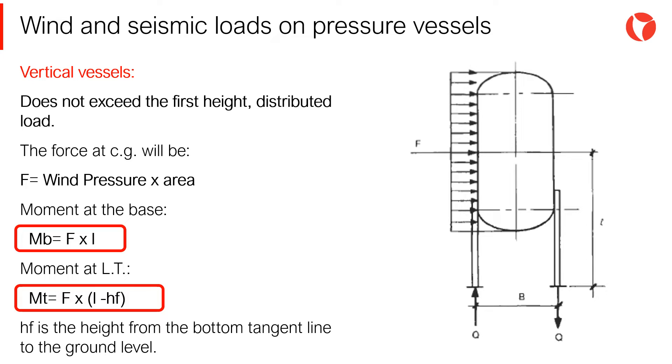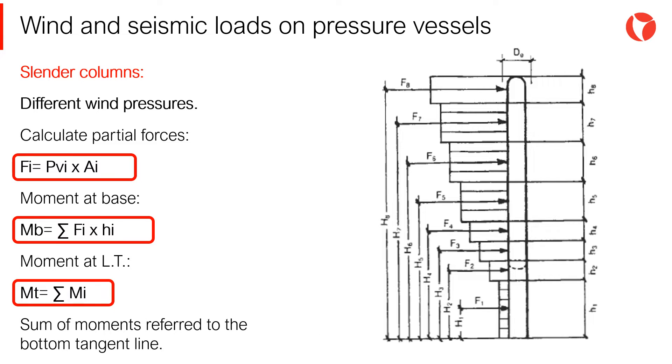The wind load F applied at the center of the cross section area of the equipment will be the wind pressure times the cross section of the vessel. For slender columns subjected to different values of wind pressure, the base shear and moments are obtained as the sum of moments of each wind pressure value. The force of each wind pressure threshold is applied at the center of each distributed load.